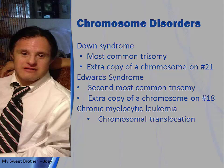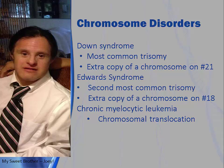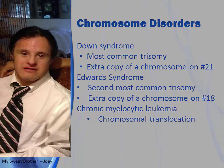Chromosome disorders are caused by structural changes within chromosomes or by an excess or deficiency of genes located on chromosomes. Down syndrome is caused by an extra copy of chromosome 21, called trisomy 21, where there are three copies instead of two, with no individual abnormal gene on the chromosome. Trisomy 18, also known as Edwards syndrome, is caused by an error in cell division known as meiotic disjunction, resulting in an extra chromosome 18 that disrupts normal development in a life-threatening way even before birth. Chronic myelocytic leukemia can be caused by a chromosomal translocation known as the Philadelphia chromosome, in which portions of chromosomes 9 and 22 are exchanged.